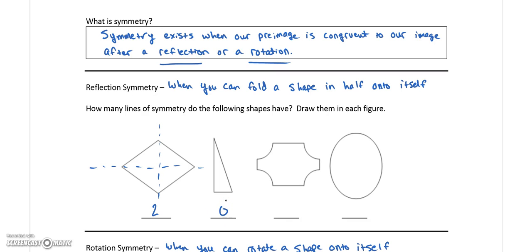Second one has zero. This one has two. Again, this diagonal is only going to work if this side and this side were the same length. That would work, but clearly that's not going to happen, right? So that would only have two. This oval would also have two.